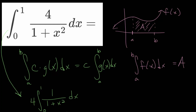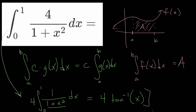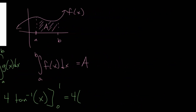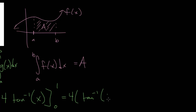With this integral, you might recognize that the antiderivative of 1 over 1 plus x squared is the inverse tangent, or arctangent. We can solve this from that knowledge: we have 4 multiplied by the inverse tangent of x, and we need to evaluate this between 0 and 1. We recognize that the function whose derivative is 1 over 1 plus x squared is the inverse tangent function. So we plug in 1 and 0, giving us 4 multiplied by the inverse tangent evaluated at 1, using the Fundamental Theorem of Calculus.